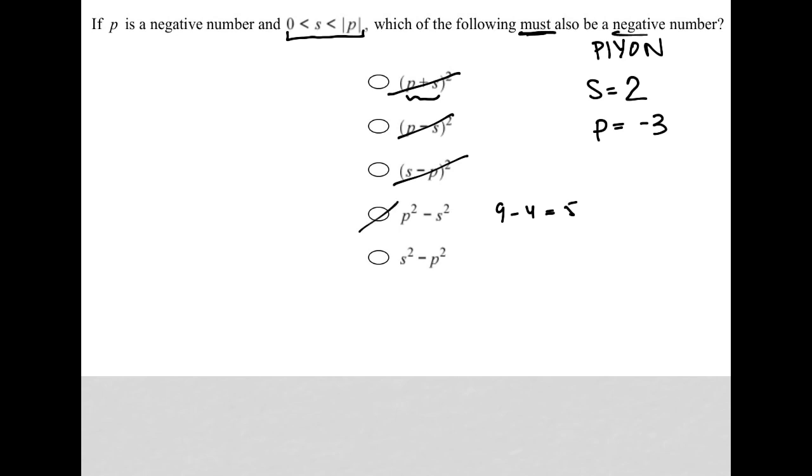And then for the last option, S squared, which is four minus P squared, which is nine, that does give me a negative number, and that should always be the case, because the absolute value of P will always be greater than S.